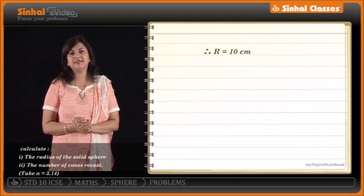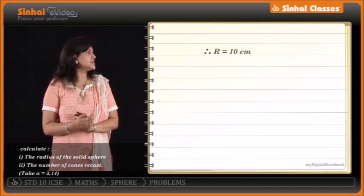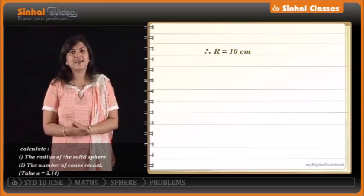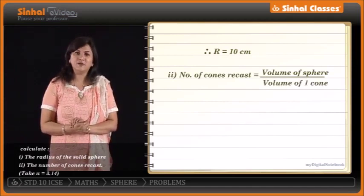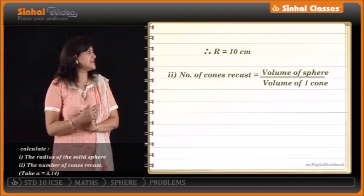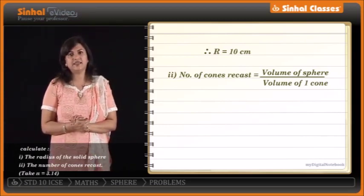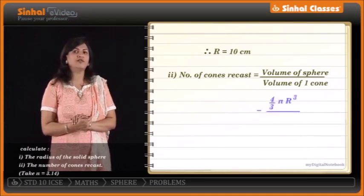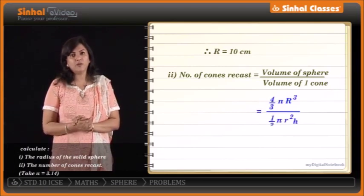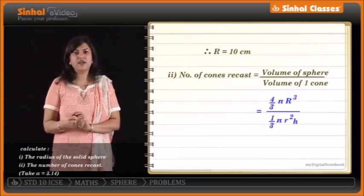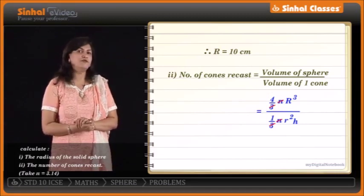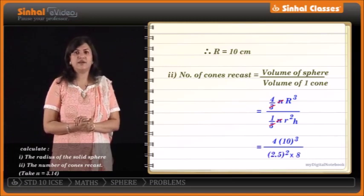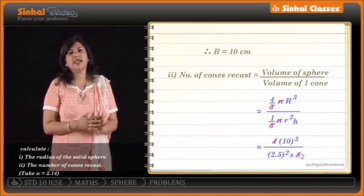For the second part, the number of cones recast = volume of sphere / volume of one cone: (4/3)πR³ ÷ (1/3)πr²H. Cancelling 3 and π, substituting R = 10, r = 2.5, H = 8: 4 × 10³ / (2.5² × 8) = 4000 / 50 = 80 cones.